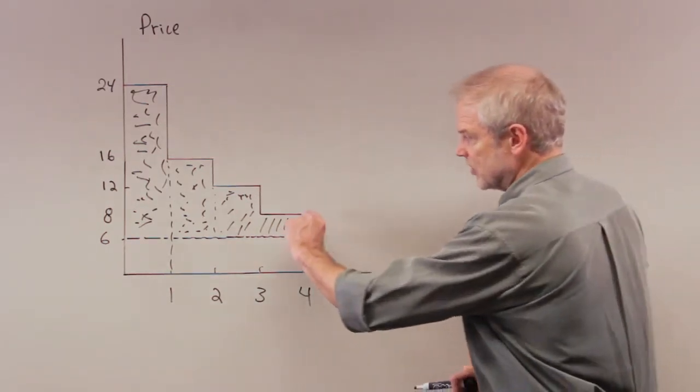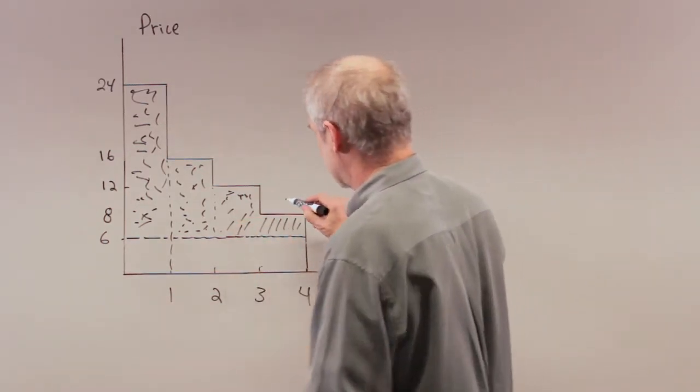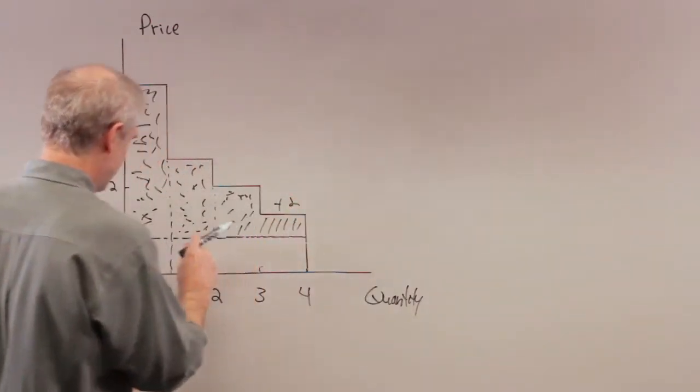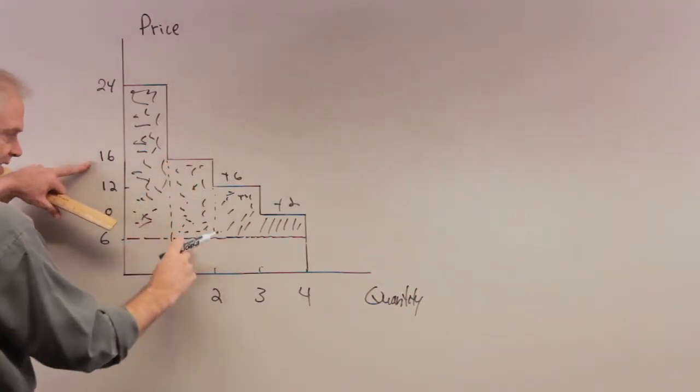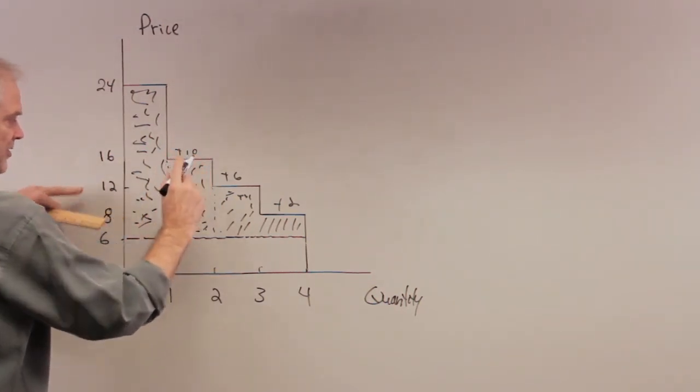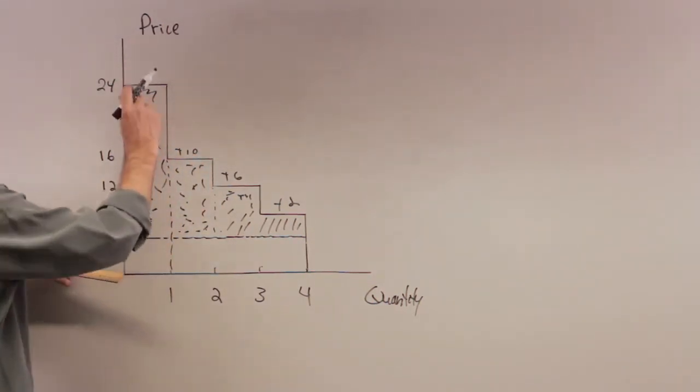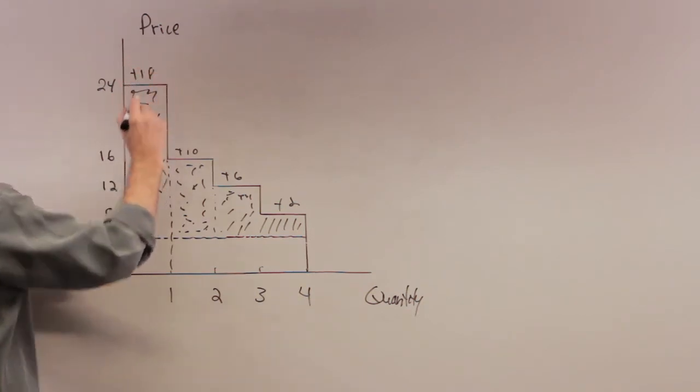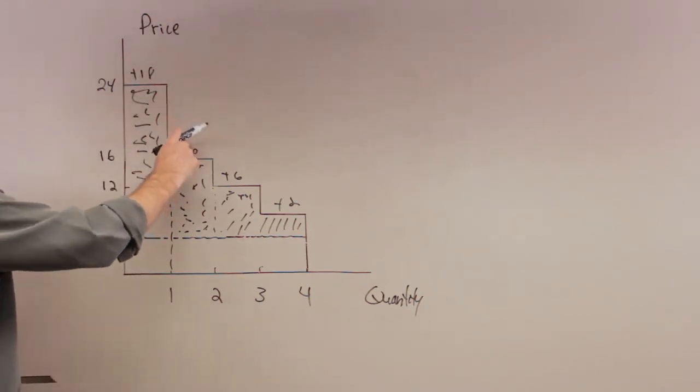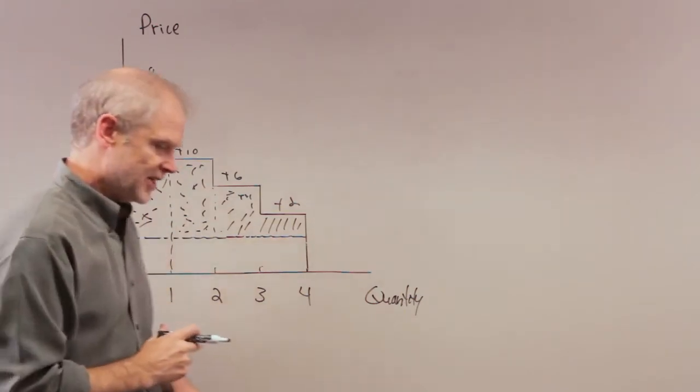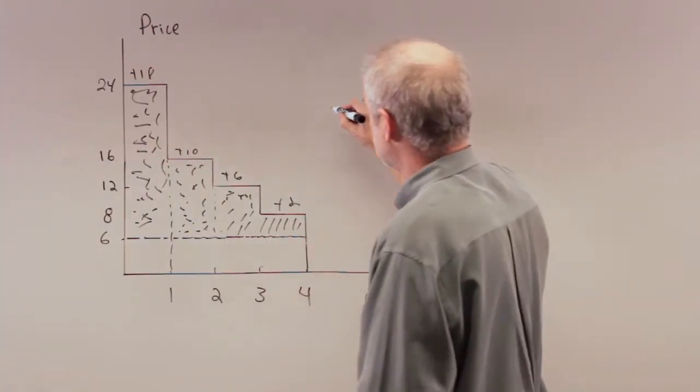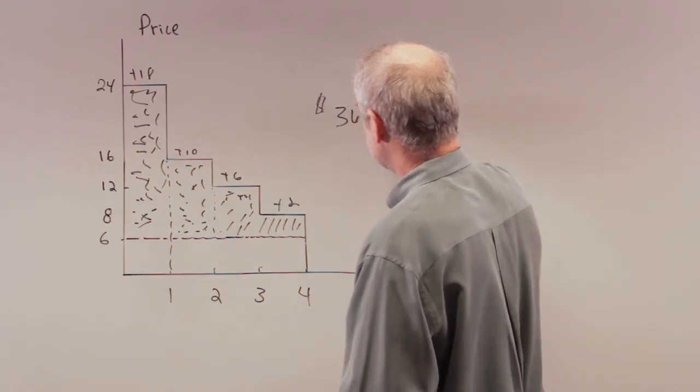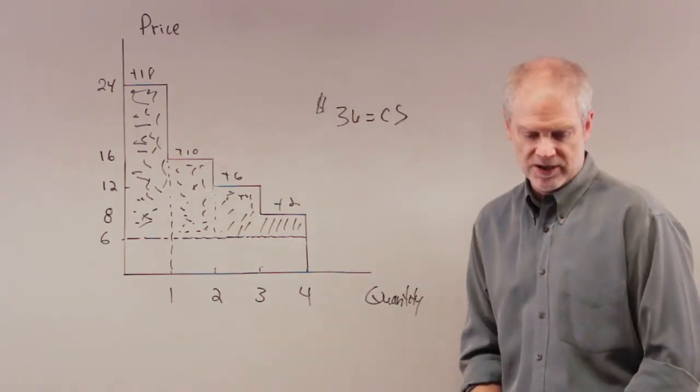So how much is that? Well, this is $2, so that's plus 2. This is the difference between 12 and 6, so that's plus $6. This is the difference between 16 and 6, so that's plus $10. And this is the difference between 6 and 24, which is plus $18. So 18 plus 10 is 28, plus 6 is 34, plus 2 is 36. Answer is $36 equals consumer surplus in this particular problem.